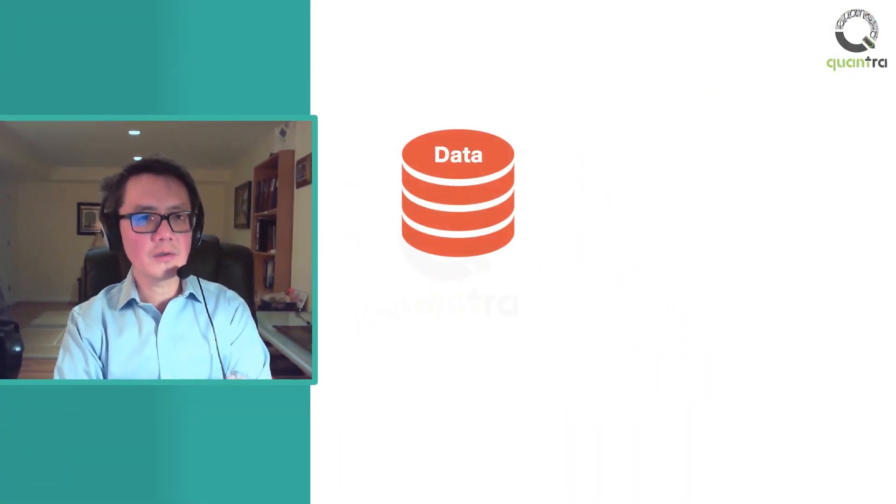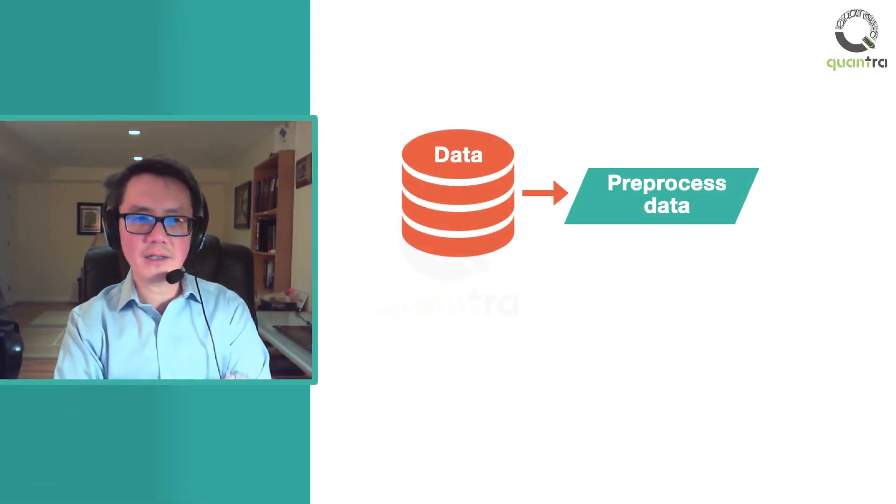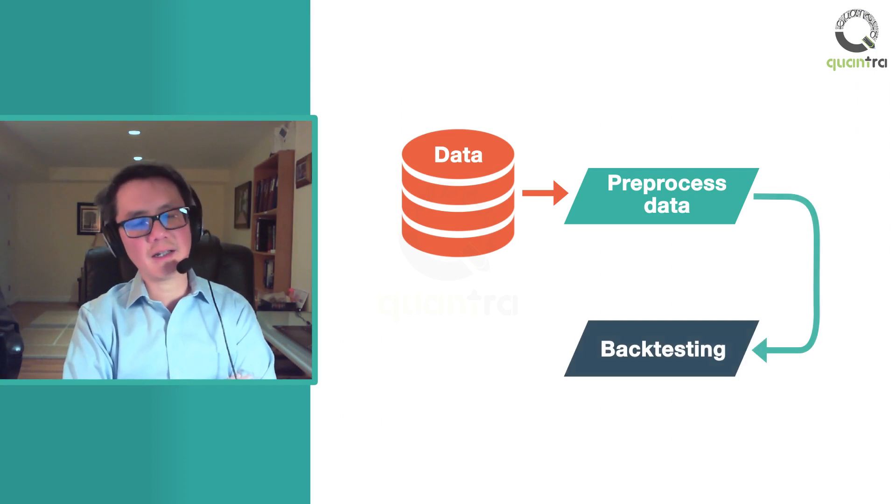For instance, say during the dot-com bubble, we bought every technology stock that currently is still being traded. That strategy would have done fabulously well. But in reality, lots of those technology stocks would have gone bankrupt and disappeared from the current data set. So it is important to pre-process the data and make data suitable for backtesting.